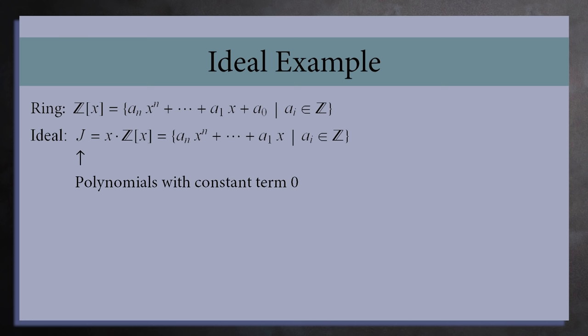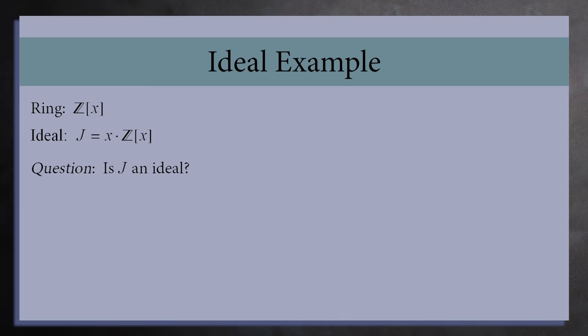We'll call this set j. This is a set of all polynomials with a constant term of zero. Does this satisfy the requirements to be an ideal?